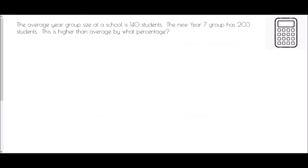So now I want to look at a couple of questions with use of a calculator. So we're told that the average year group size at a school is 140 students. The new year 7 group has 203 students. This is higher than the average by what percentage? Well again what we're basically looking for is what percentage increase has there been? And so from 140 to 203 that is an extra 63 students. But I need to compare that with the average with the normal value so 140 and then multiply it by 100. If I do that I will get the percentage straight out.